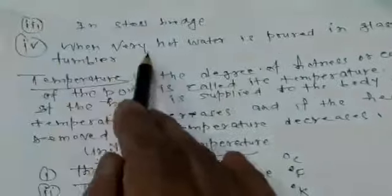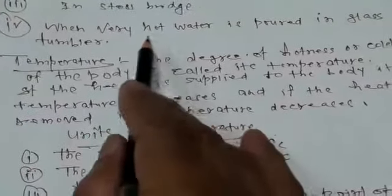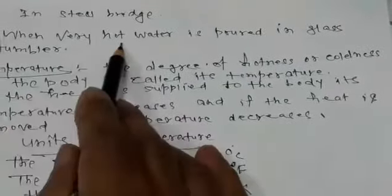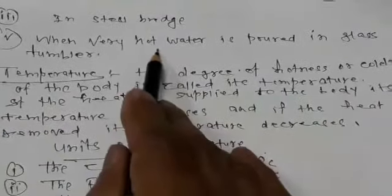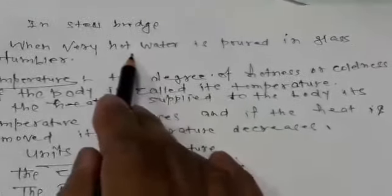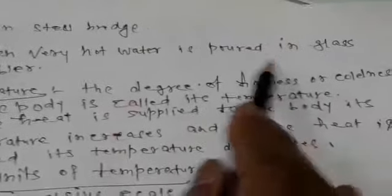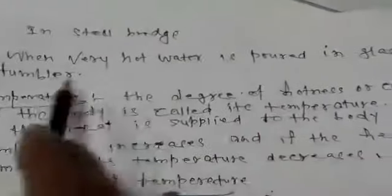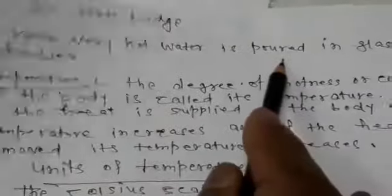Another problem: when very hot water is poured into a glass tumbler, the inner surface of the glass expands due to heat, but the outer surface does not expand as quickly. This unequal expansion causes the glass to break. These are the problems caused by the expansion of solids.